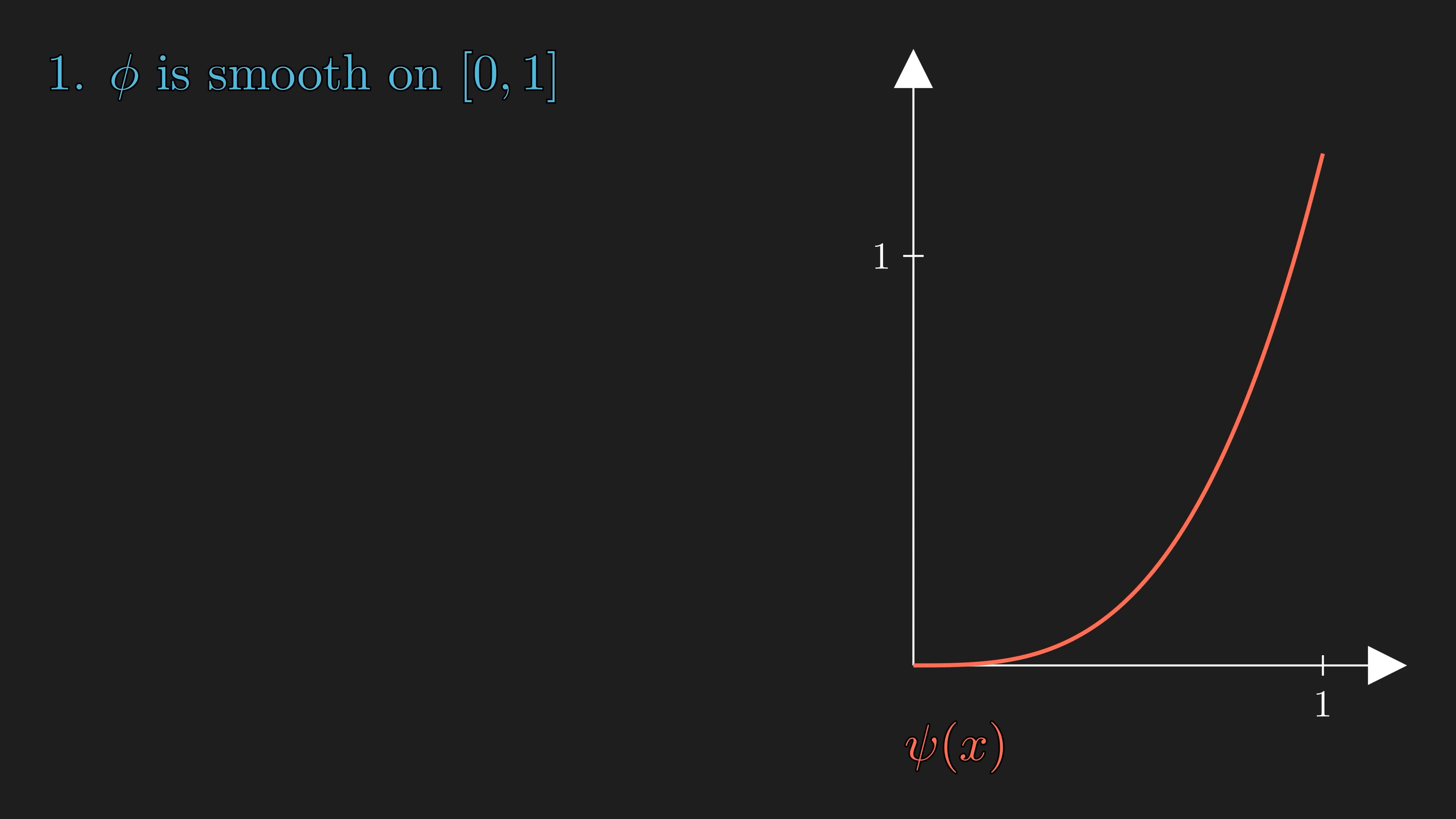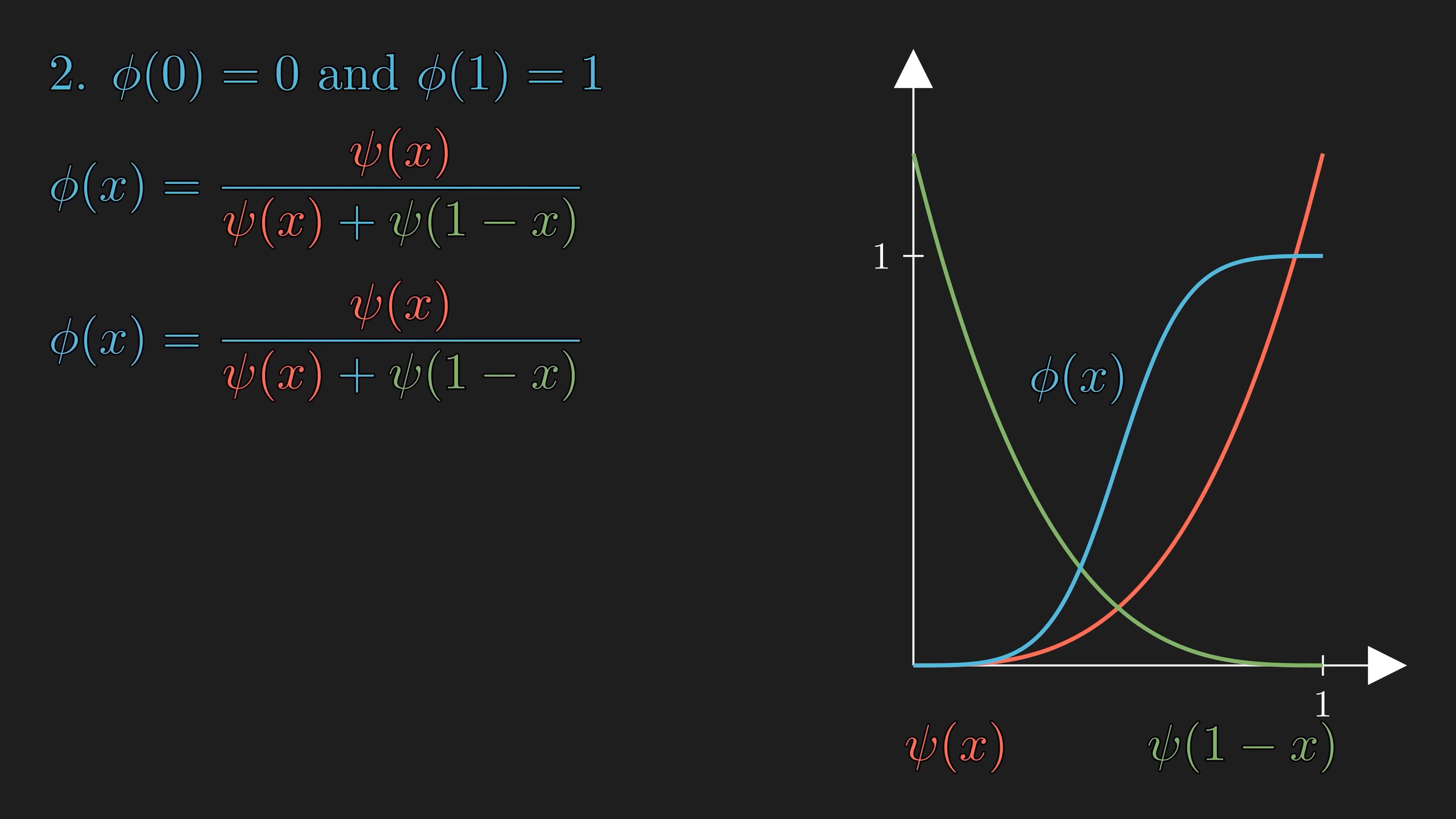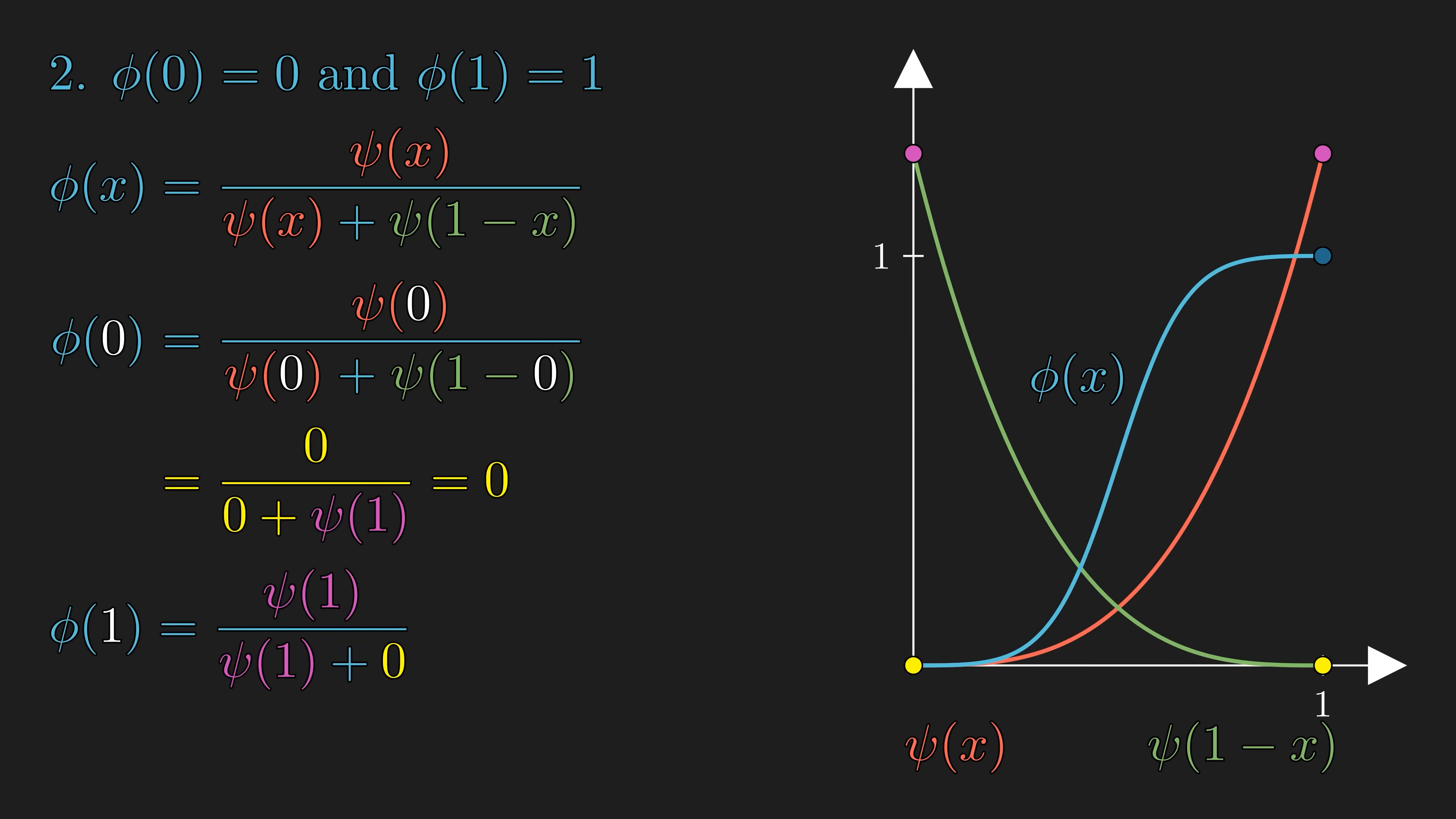The proof of the first property is quite simple, as phi is made up of sum, composition, and quotients of psi, which is smooth. And the denominator part, which I will call h(x), never equals 0. In order to see that the second property holds, phi of 0 makes the numerator equal to 0, and phi of 1 makes the numerator and the denominator equal.